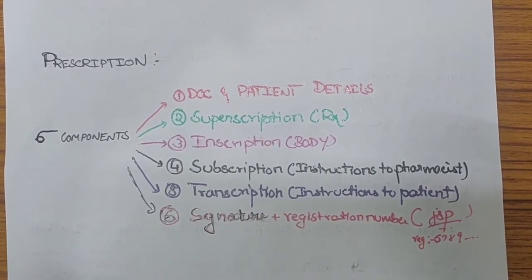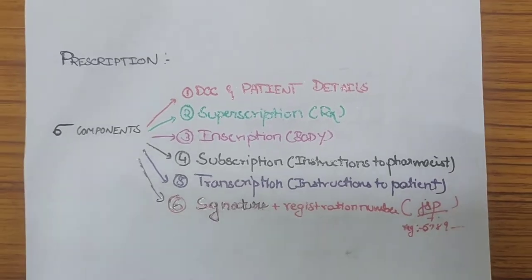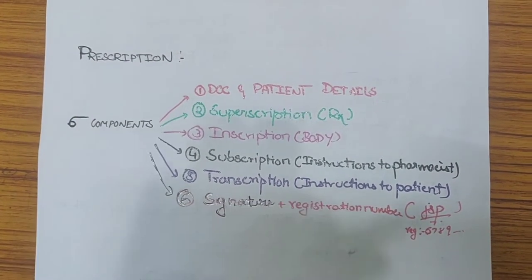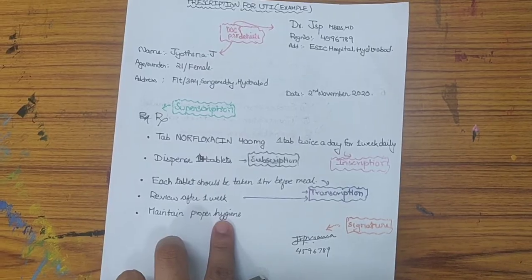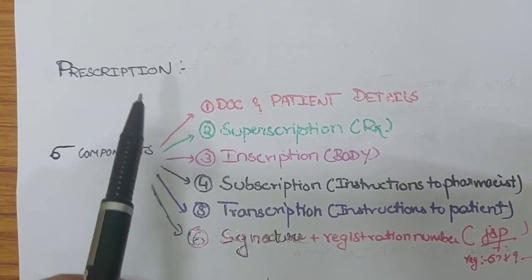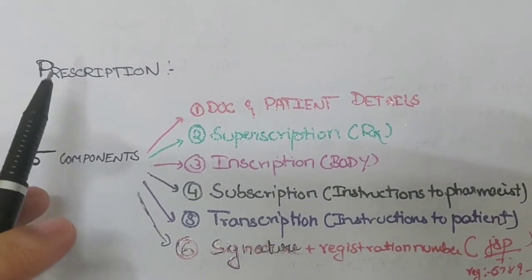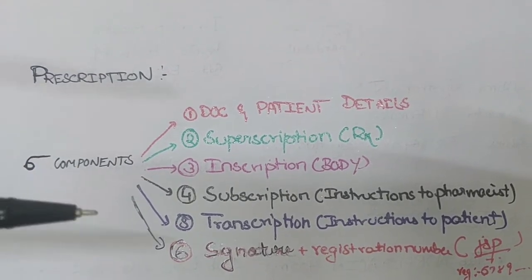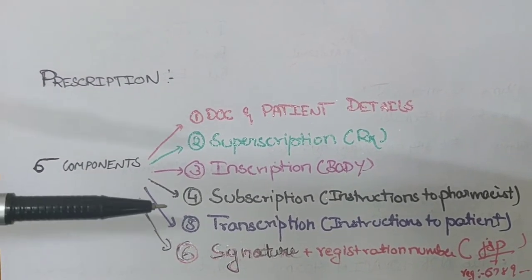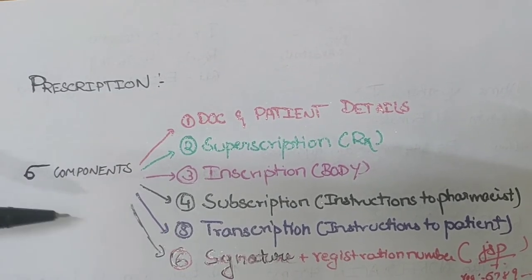Let's learn about the format for writing a prescription. This video is divided into two parts: first I will talk about the components of a prescription, and in the later part I will give an example of how to write a prescription. A prescription is a written order by a qualified physician to a qualified pharmacist for dispensing of drugs or medication. Prescription writing should always be written legibly and must be free from any errors.